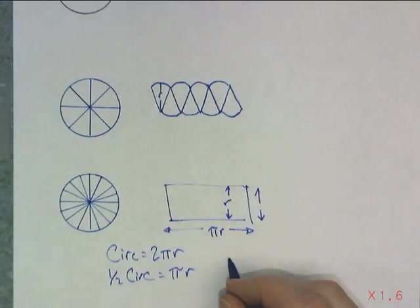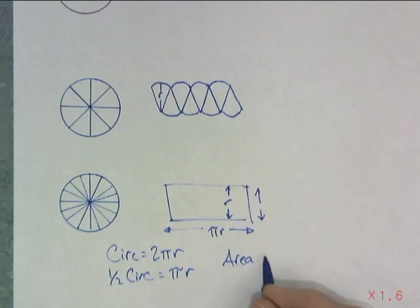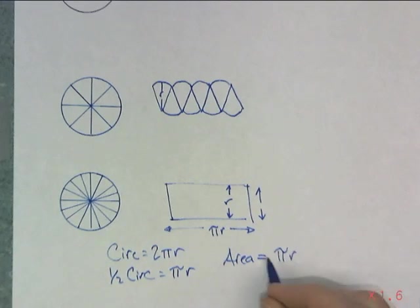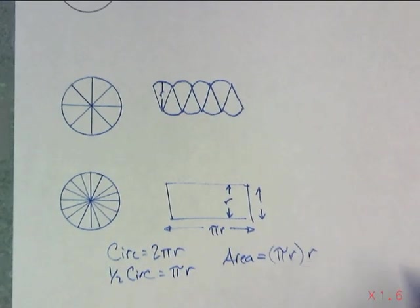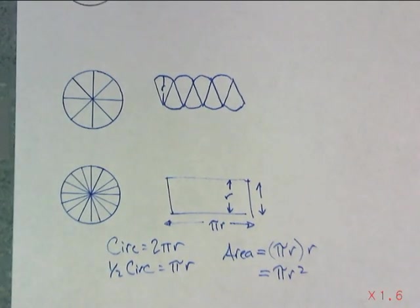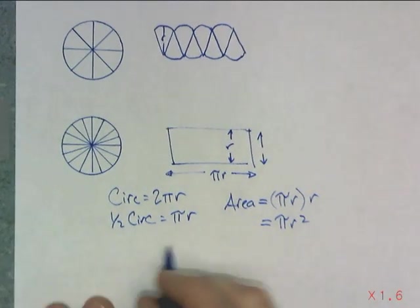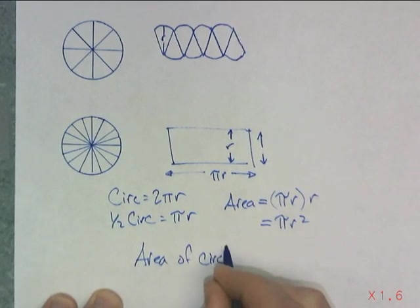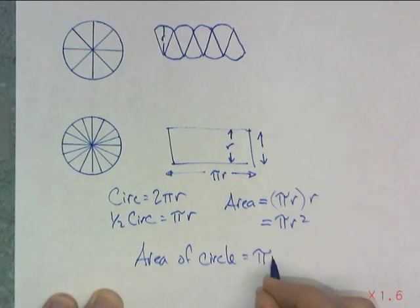The area of this shape would equal base of πr times height of r, which would give me πr². And so that's one way of explaining how to get the area of a circle. The area of a circle equals πr².